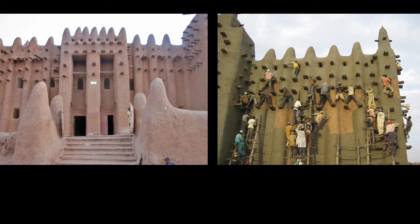Wooden beams line the surface of the structure, visible both on the exterior and interior, creating a distinctive look. Some of these support the ceiling, but the protruding exterior beams are used for annual maintenance — they help anchor scaffolding so the people of Jenne can reach all parts of the wall during the annual replastering. Mud brick does crack or sometimes sag, especially during the rainy season, so the mosque needs to be resurfaced quite often.